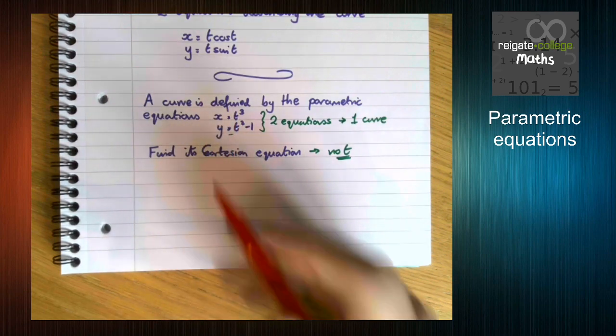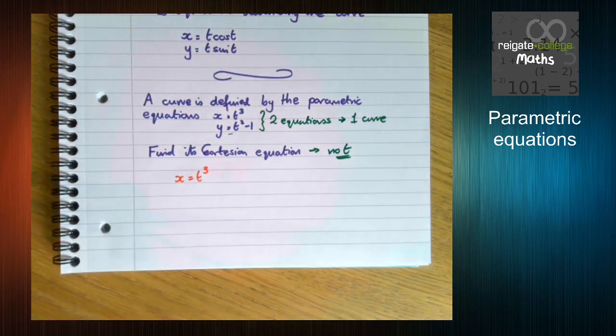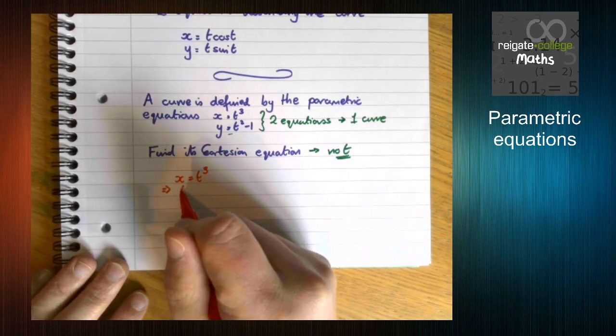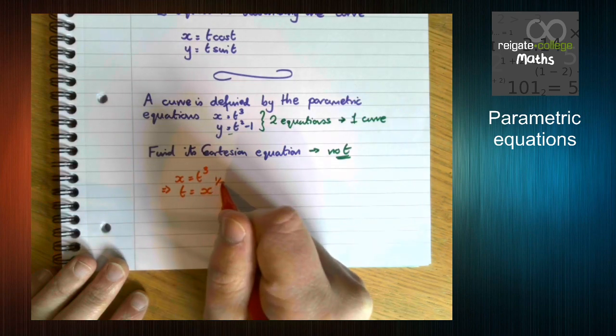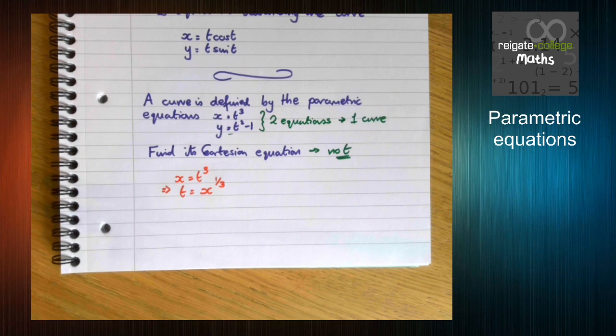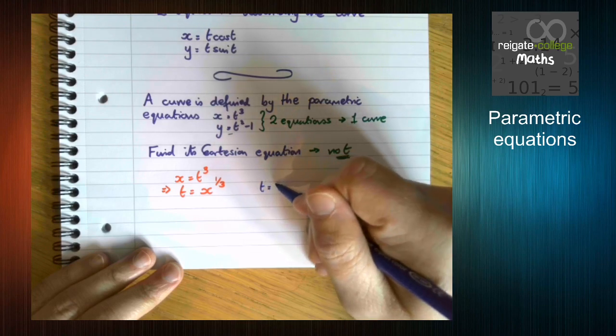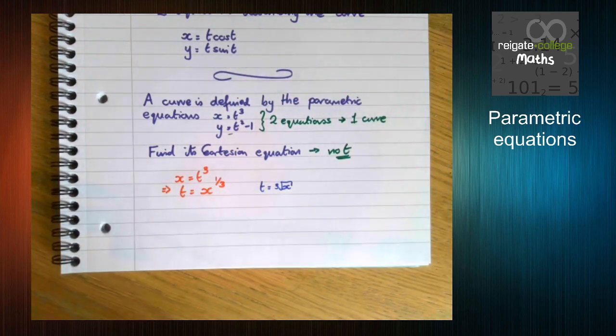I'm going to use the first equation x equals t cubed. Now why do I want to do that? Well, if I start playing around with the y equation, I'm going to have to square root, which means I've got to worry about a plus or minus, which is a bit of a faff. Playing around with the cubic means I don't have to worry about that. So I'm going to rearrange to get t is x to the third. Now I've decided to write it as x to the third instead of the cube root because that's going to make my final answer look a little nicer. It's not wrong to write this as t equals the cube root of x. It's just a bit of a mess.